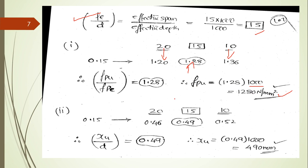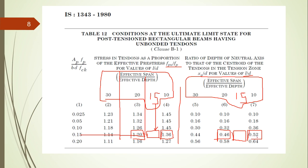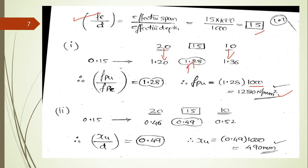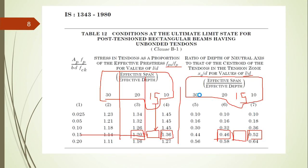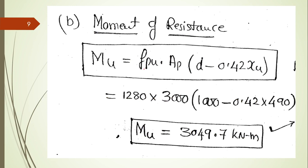For x_u/d, the table gives 0.46 for ratio 20 and 0.52 for ratio 10. Interpolating gives x_u/d = 0.49. Therefore x_u = 0.49 × 1000 = 490 mm.